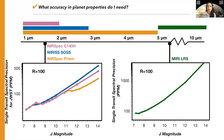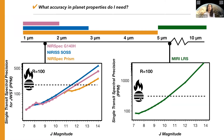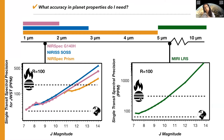Here are four JWST spectroscopy modes all sampled at a resolution of 100. On the y-axis is the single transit spectral precision in parts per million, and on the x-axis is J magnitude. Hot Jupiters have spectral features in the hundreds of ppm, meaning there's a ton of awesome science you could theoretically do in just a single JWST transit. Terrestrial planets, on the other hand, have spectral features in the tens of ppm, so for virtually any spectroscopy you want to do, you're going to have to stack multiple transits. At a J of 12, you're kind of pushing the limit of what spectral precision you need to do hot Jupiter science with just a single or a few transits.